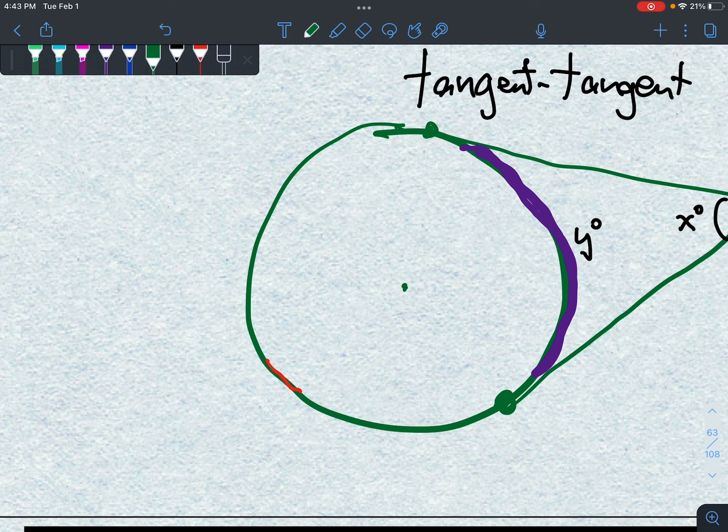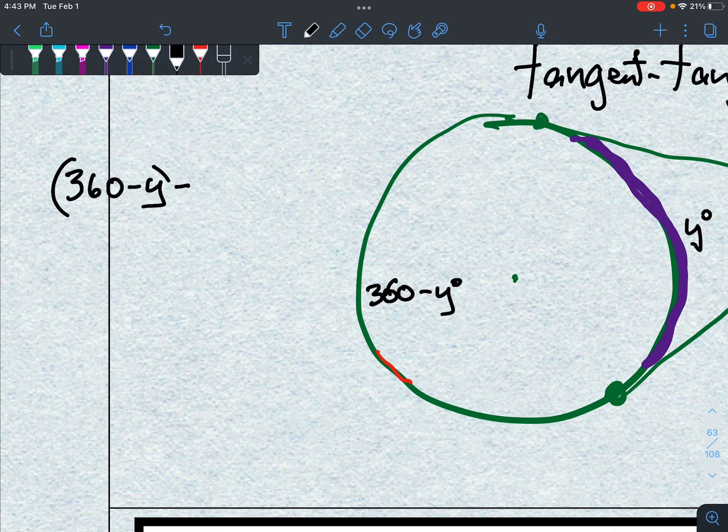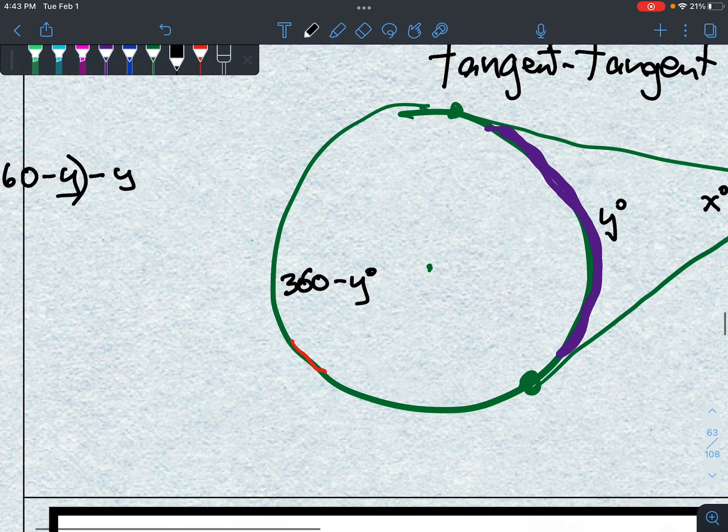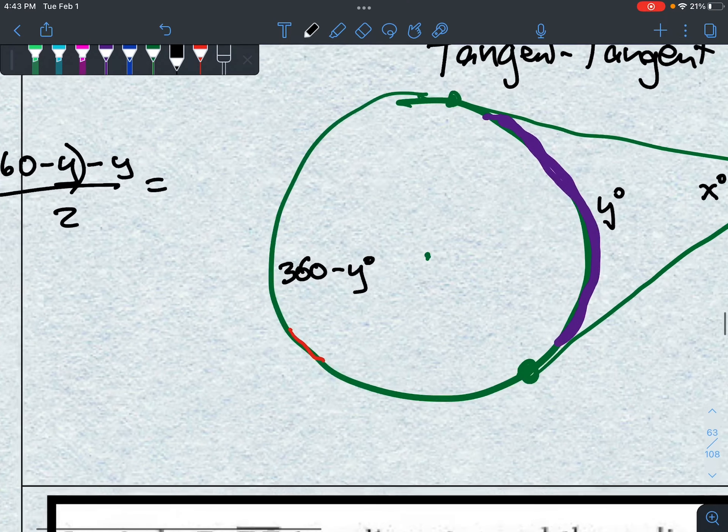We know that because the full circle is 360, that this remaining major arc is 360 minus y. I have some tango music in the background, hopefully it's not too distracting. So I'm going to say 360 minus y minus the other y divided by 2 should give me x.